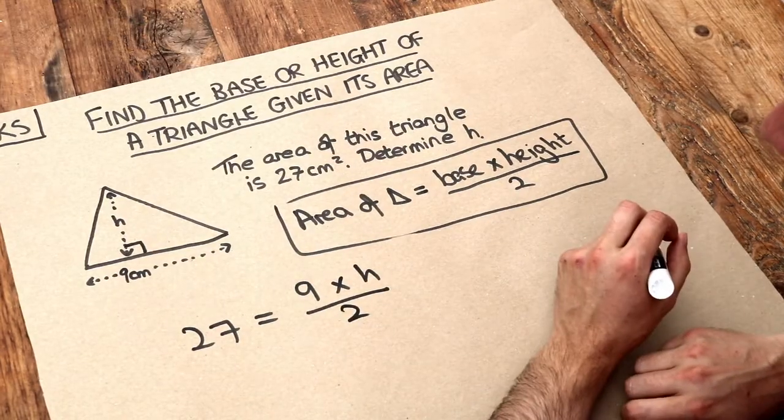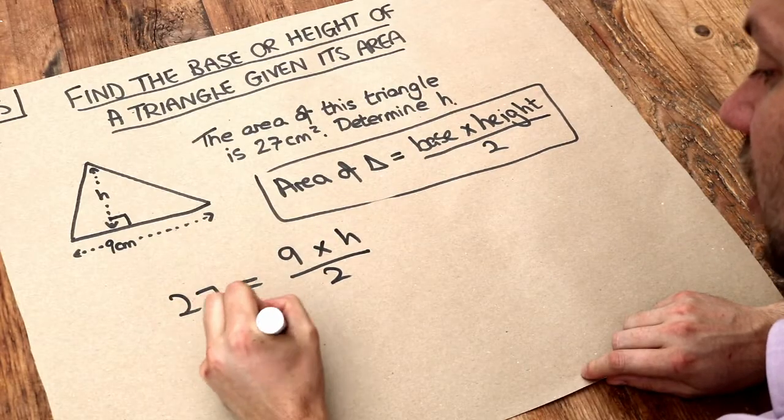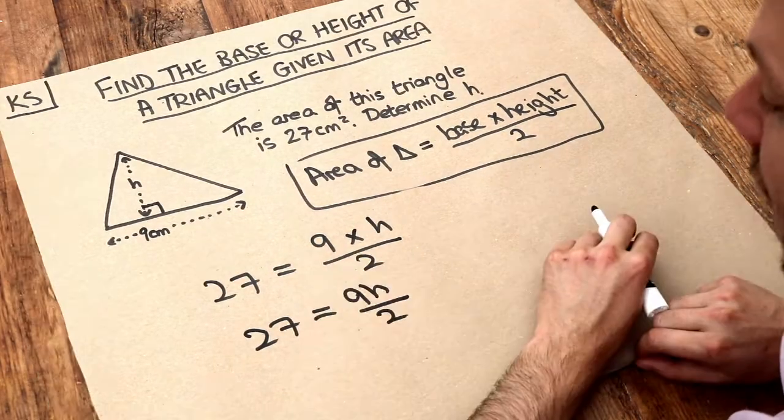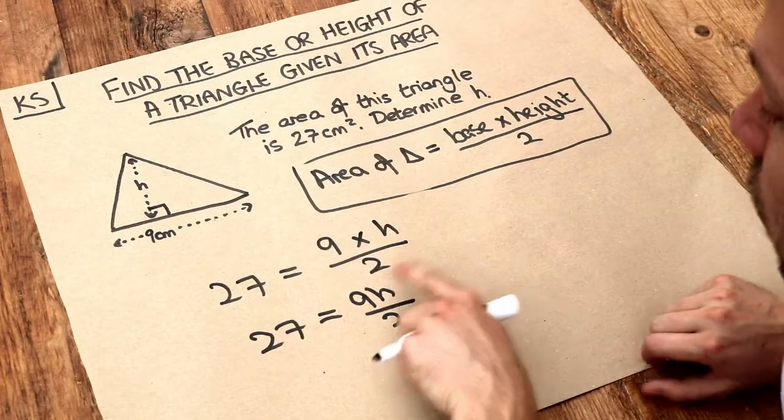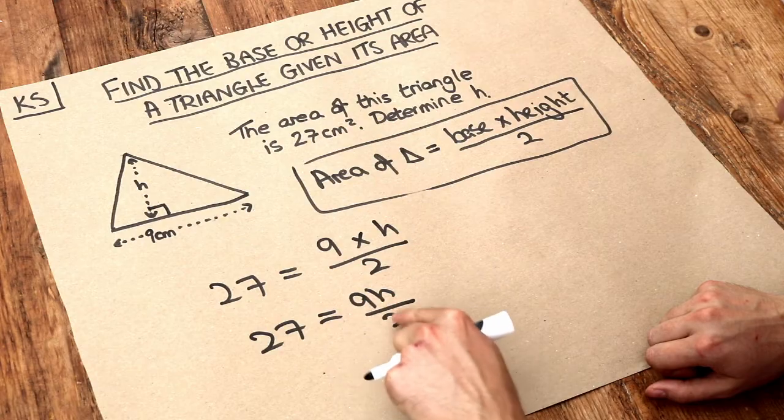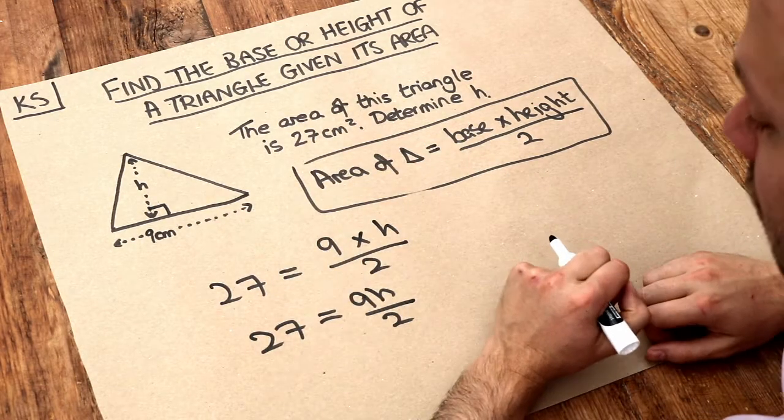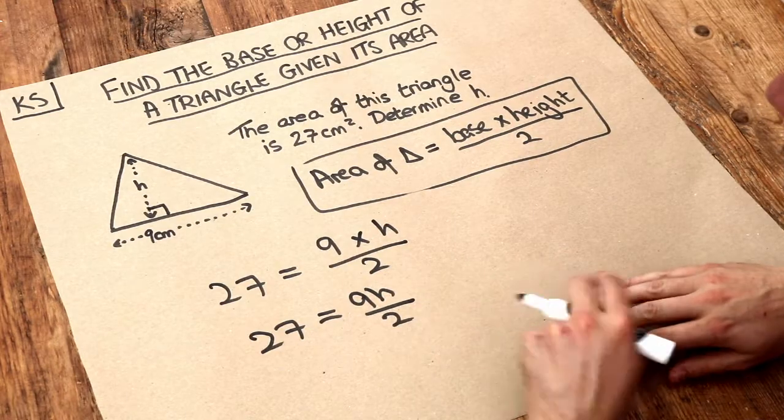So we just need to solve this equation. Now if I just simplify this, 9 times h is just 9h. Now how would we solve an equation like this? We want to try and get h on its own, and we can see that h has been multiplied by 9 and then divided by 2. Now remember we want to undo the last thing that happened to the variable, the h, first.